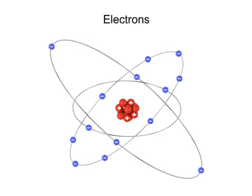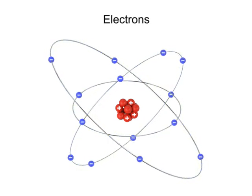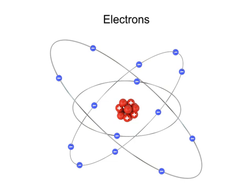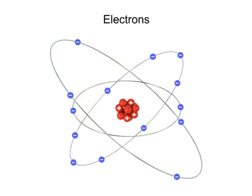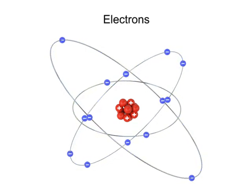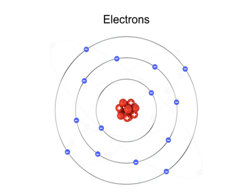Electrons move around a nucleus of an atom in concentric orbits. These orbits or shells represent different energy states that electrons can exhibit. The farther an electron is from the nucleus, the greater its potential energy.